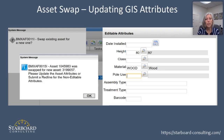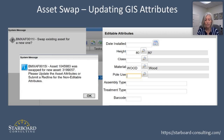Moving along to the asset swap: because my GIS data is available to me in Maximo and acts just like a Maximo object, even though it's not stored in Maximo, if I invoke the asset swap feature, I can have a configured screen that pops up allowing me to edit GIS attributes in that swap process. This gives me the ability to, when I change out an asset, update my GIS data with the new asset information for the newly installed asset, keeping my data in sync without having to replicate it across both systems.